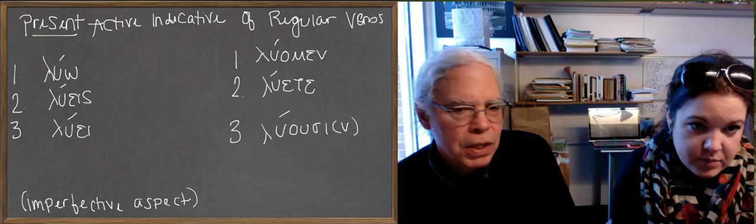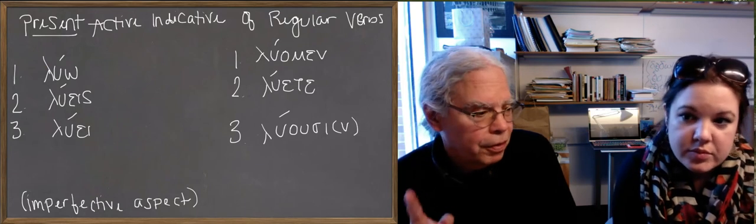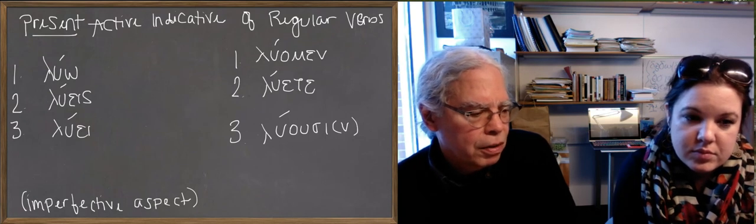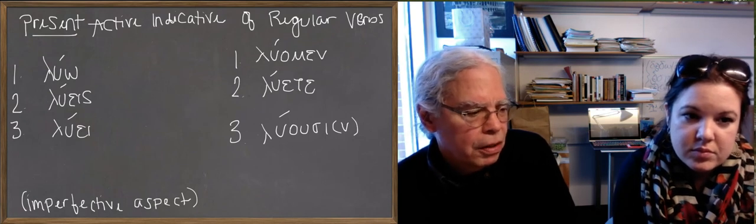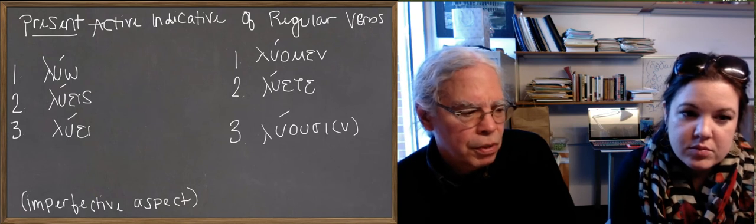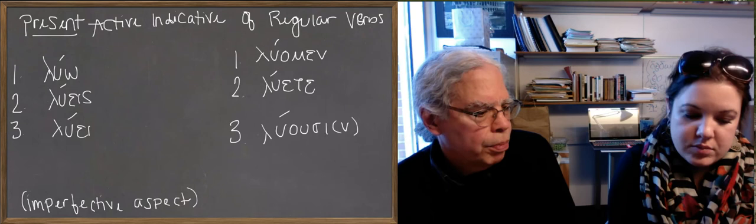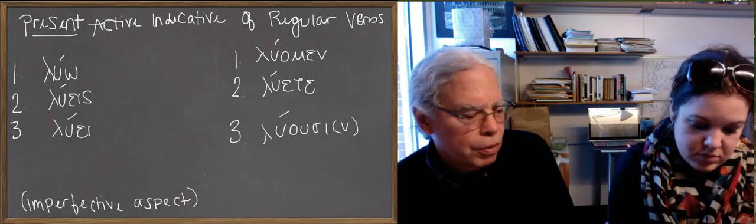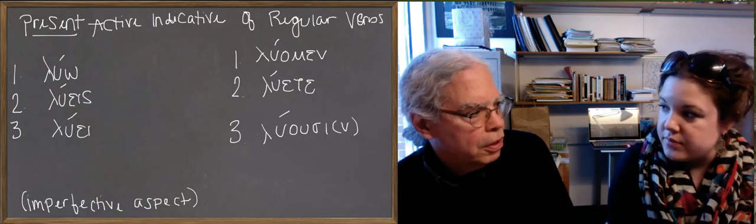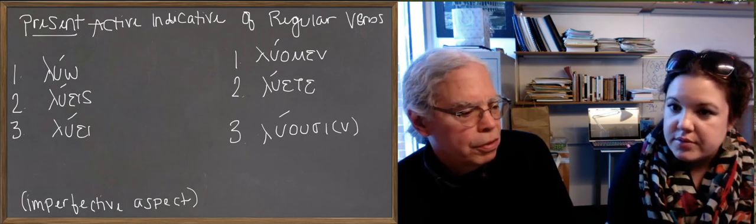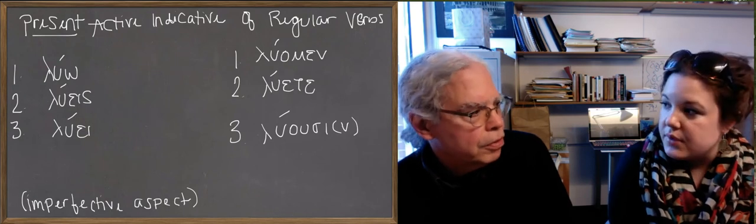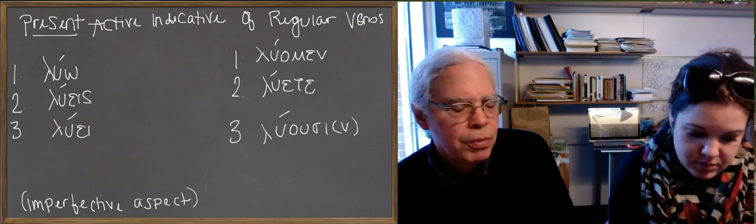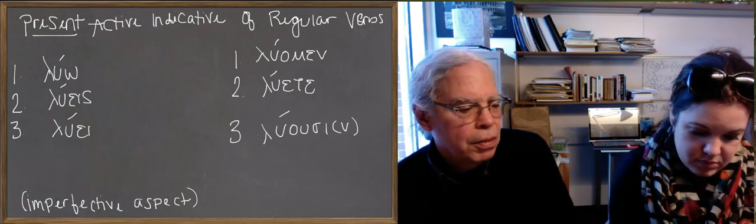The second person, singular, means you, a singular person. In English remember that you can be either singular or plural, but in Greek there's a difference. You, a singular person, are releasing and the third person singular means he, she, or it is releasing. In other words, there's a subject implicit in these verb forms and you could put a period after luo or luis or lue and it would be a sentence. He or she or it is, you or I are releasing is a sentence, because the Greek verb has the subject, the pronominal subject, the I, the you, the he, she, or it embedded in it.